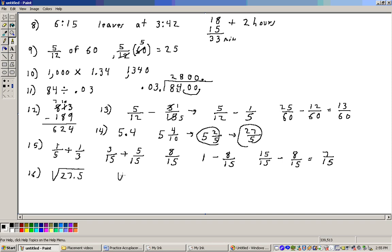The square root of 25 is 5 because 5 times 5 is 25, and the square root of 36 is 6, and 27.5 is a lot closer to 25, so 5 would be the closest answer on that. So the closest whole number would be 5.